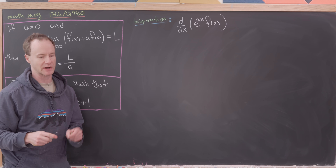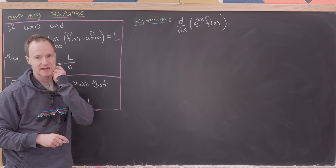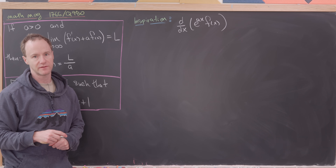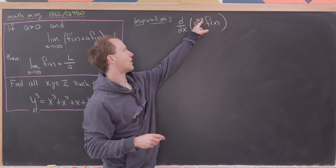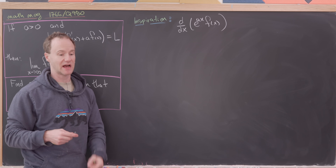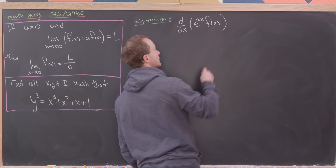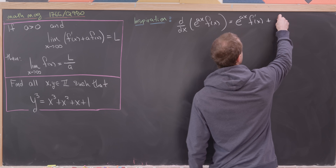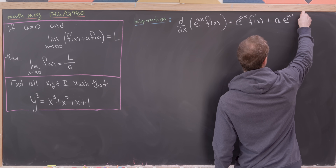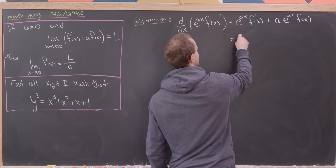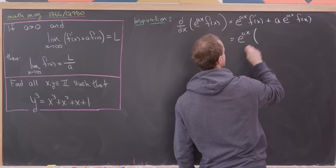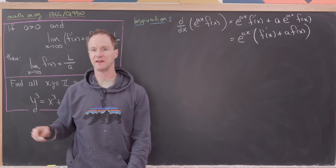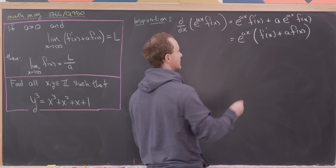We have e^(ax) times f(x), and we're going to take the derivative. Why e^(ax)? Because exponential functions have the nice property that when you take their derivative you get the coefficient of x in the exponent times the original function. Taking the derivative gives us e^(ax) times f'(x) plus a times e^(ax) times f(x), and factoring out e^(ax) leaves us with f'(x) plus a times f(x).